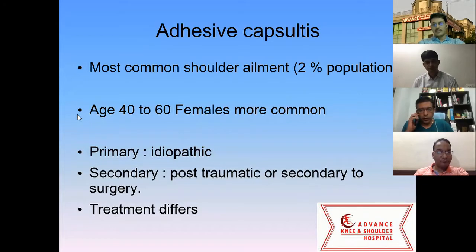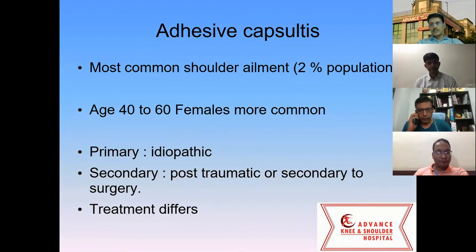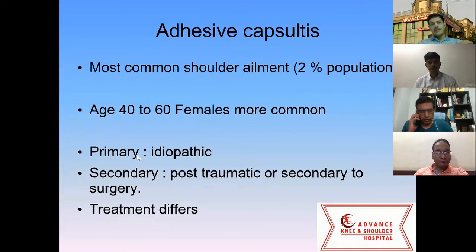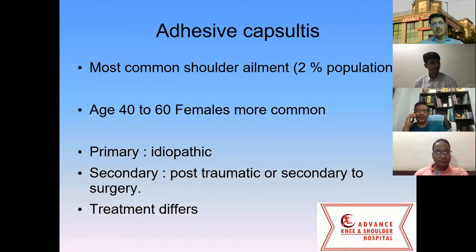Capsulitis is one of the most common shoulder ailments and will be the most common diagnosis when a person starts to do shoulder arthroscopic surgeries. It is most common in females aged 40 to 60 years. It can be a primary frozen shoulder or a secondary frozen shoulder. Primary frozen shoulder or adhesive capsulitis is usually idiopathic, while secondary adhesive capsulitis can be post-traumatic or secondary to surgery. The treatment of both is a little different.